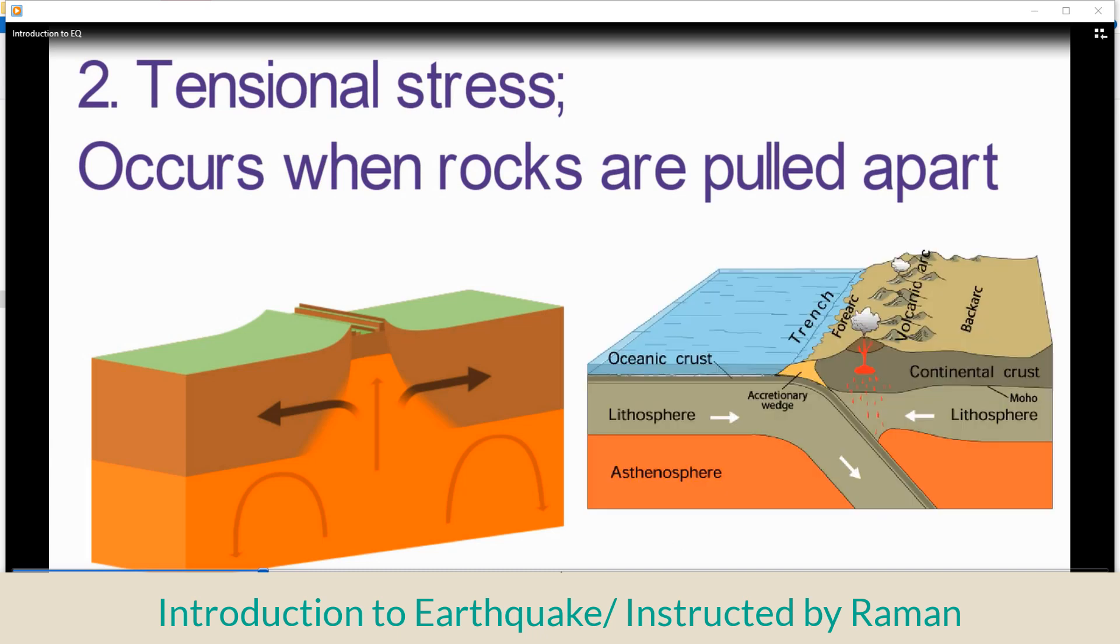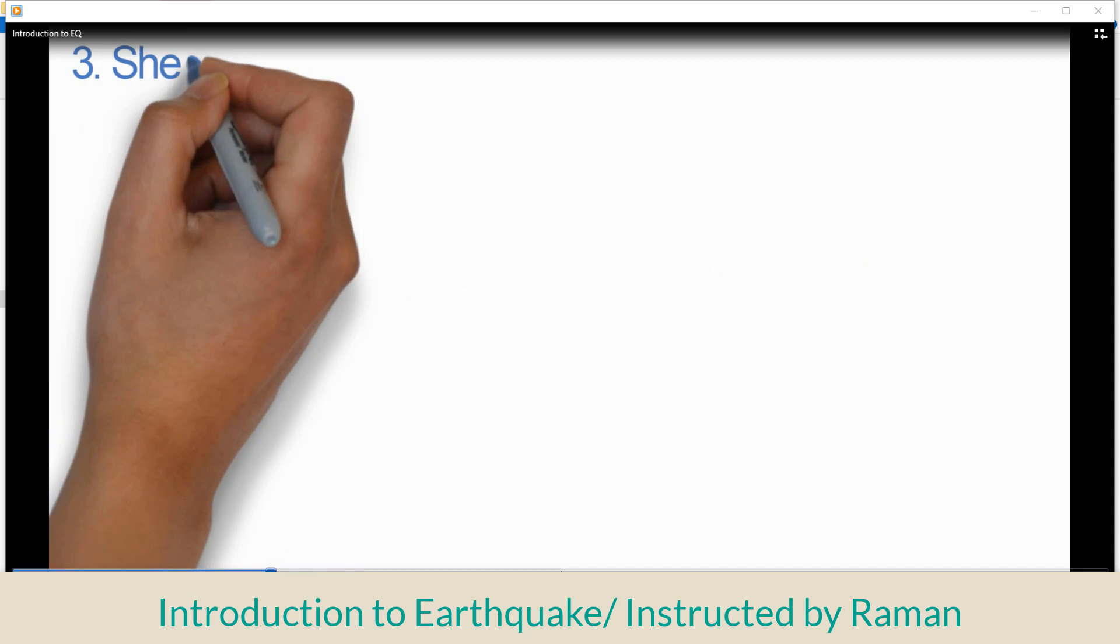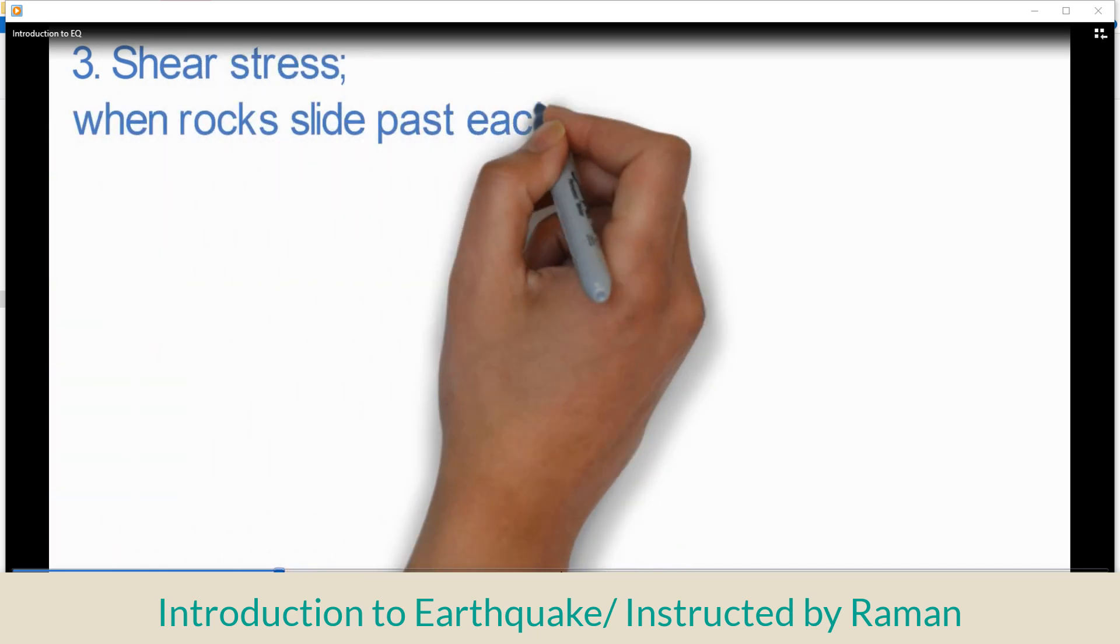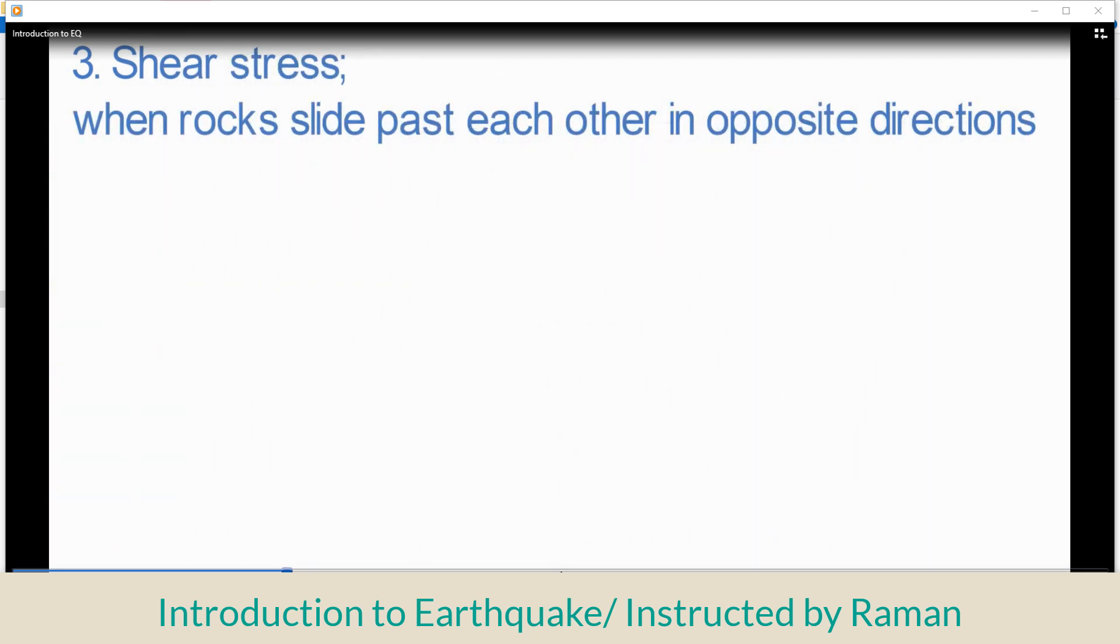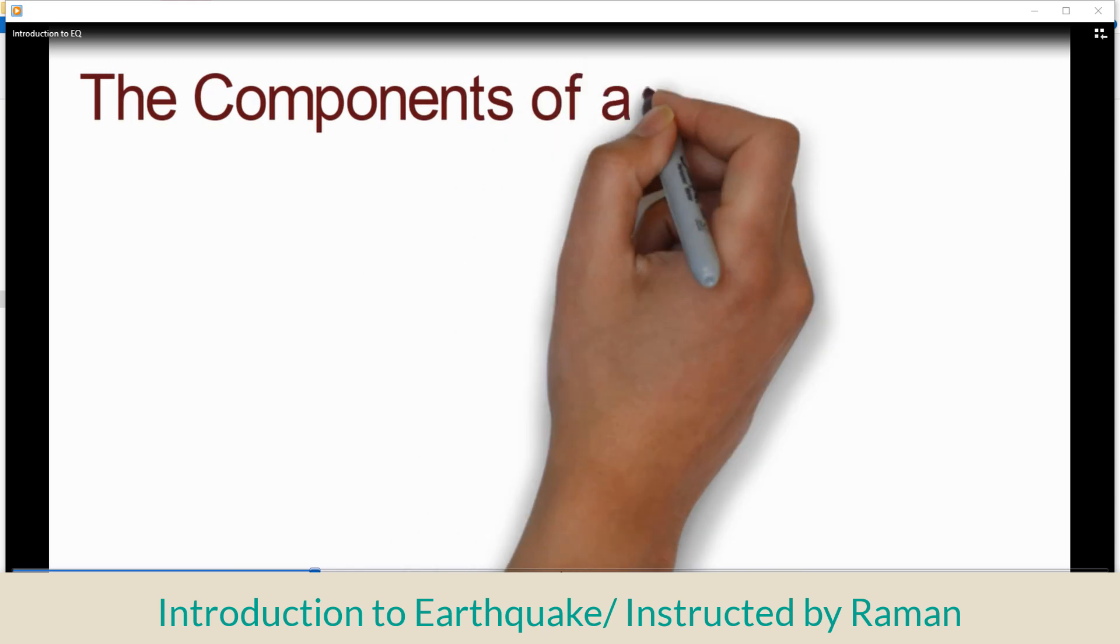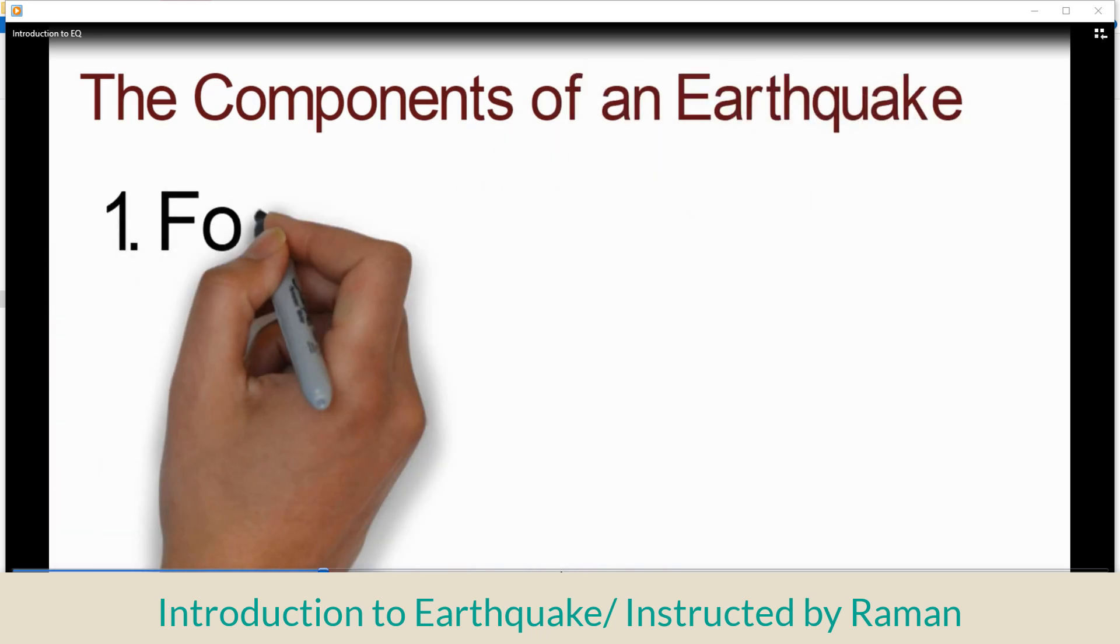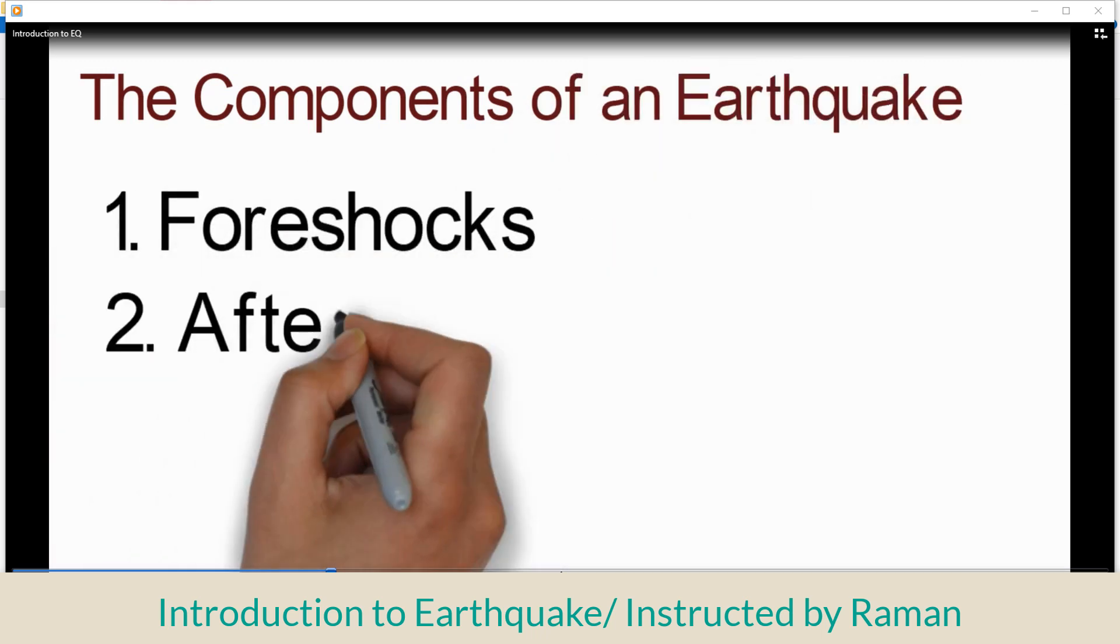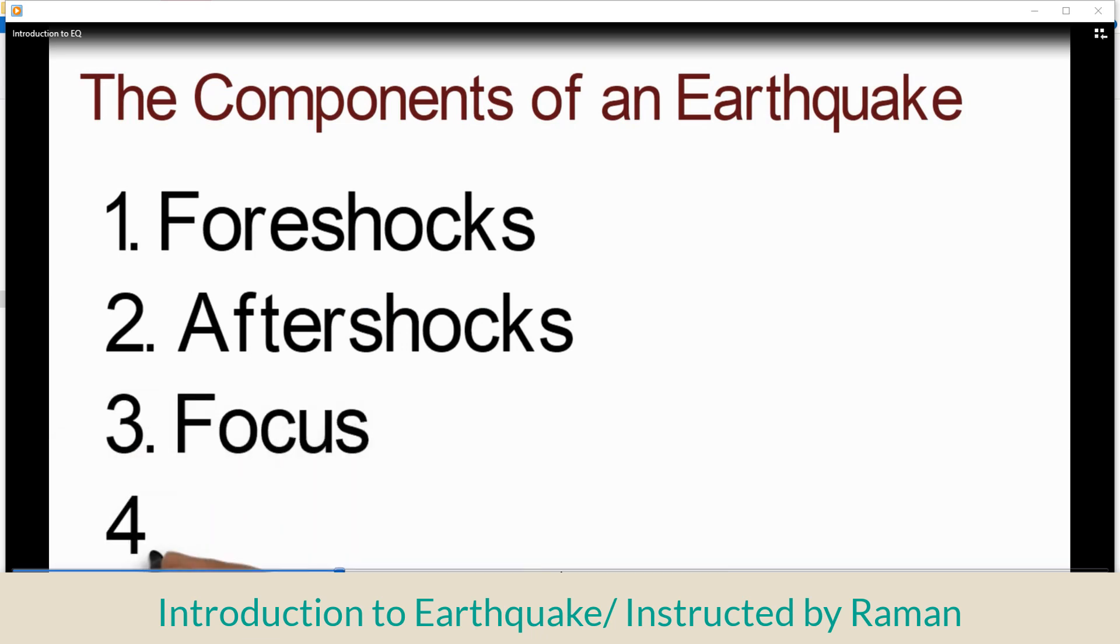Shear stress occurs when rocks slide past each other in opposite directions, which is also a reason for earthquakes. The components of an earthquake include foreshocks, aftershocks, focus, and epicenter.